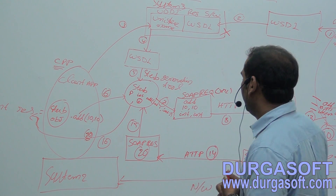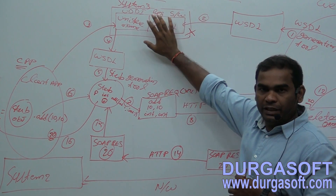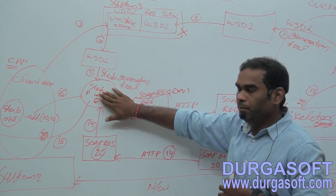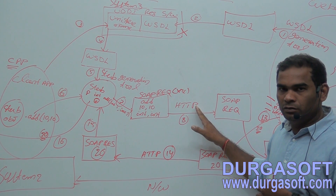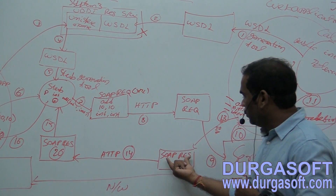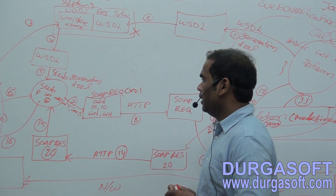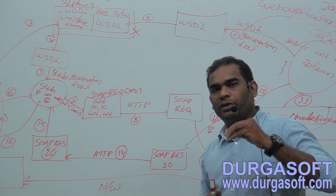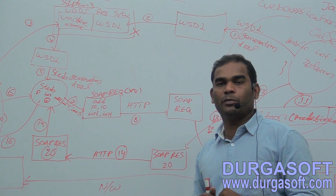The main points we need to remember are: the WSDL file, the UDDI registry, the stub, the SOAP request, HTTP protocol, the skeleton, and the SOAP response, and again HTTP protocol. If we observe, we can find six components in this web service architecture. These six components are recommended by the web service specification to share information between two interoperable applications.